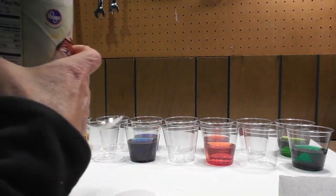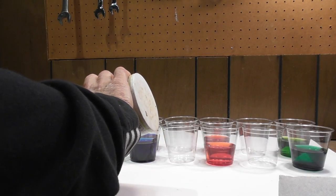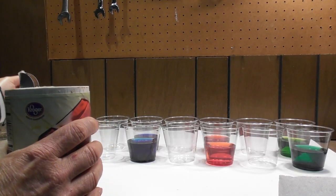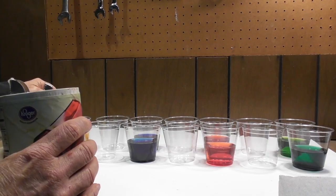In an experiment you have an independent and dependent variable. The independent variable is what you are changing or manipulating, and in this demonstration or experiment you will be changing or manipulating the type of water.